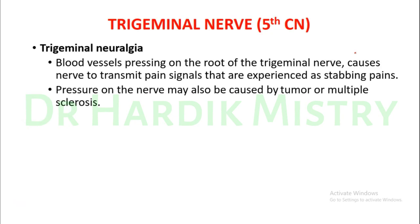Trigeminal neuralgia occurs when blood vessels press on the root of the trigeminal nerve, causing it to transmit pain signals experienced as stabbing pains. Whenever a blood vessel presses on the nerve fibers of the trigeminal nerve, there will be a stabbing pain experience — this is known as trigeminal neuralgia. Pressure on the nerve may also be caused by a tumor or multiple sclerosis.